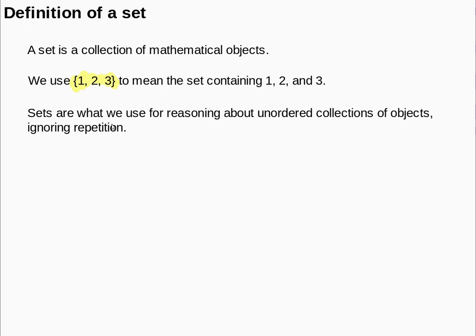Sets are what we use for reasoning about unordered collections of objects, ignoring repetition. By unordered, I mean the order doesn't matter. By ignoring repetition, the set containing 1 and 1 is equal to the set which just contains 1. The only question you can ask about a set is whether they contain a particular thing or not — you can't ask how many times, or whether something is first, second, or third.